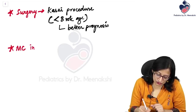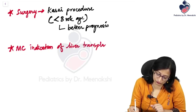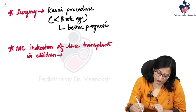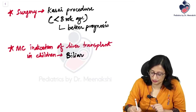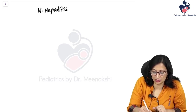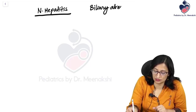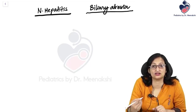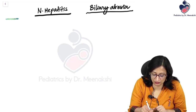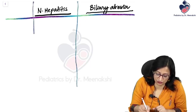Biliary atresia is the most common indication of liver transplantation in children. In the neonatal period, a very close differential diagnosis of biliary atresia is neonatal hepatitis. It is very important to distinguish between these two conditions — neonatal hepatitis where surgery is not required, and biliary atresia where surgery is required.